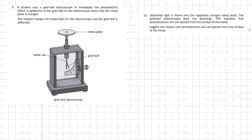Question 7 of the 2018 Higher Physics examination, section 2. A student uses a gold leaf electroscope to investigate the photoelectric effect. A deflection of the gold leaf on the electroscope shows that the metal plate is charged. The student charges the metal plate on the electroscope and the gold leaf is deflected, as can be seen in the diagram.